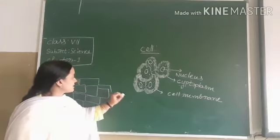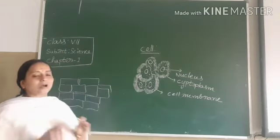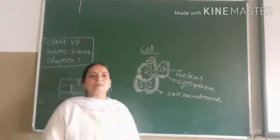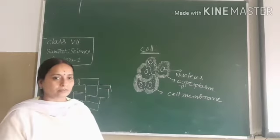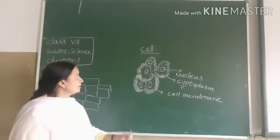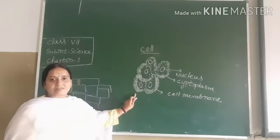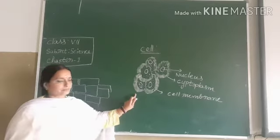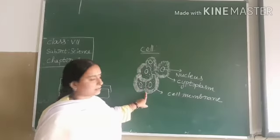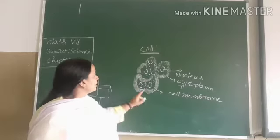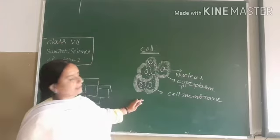Cells are just like bricks — they are arranged. All living organisms are made up of cells. Today we will discuss about the structure of a cell. Every living organism is made up of cells.